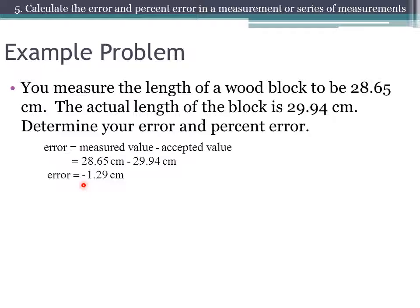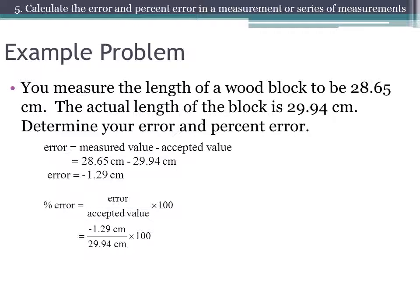If you measured too high, your error would be positive. To find the percent error, we take the error — negative 1.29 centimeters — divide by the accepted value, and multiply by 100. Plugging in those values gives you a percent error of negative 4.31%. Again, it is negative because your measurement was low.